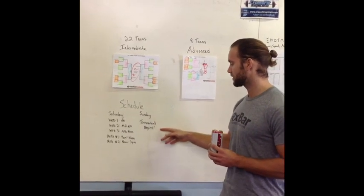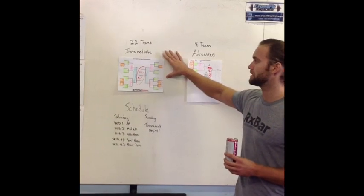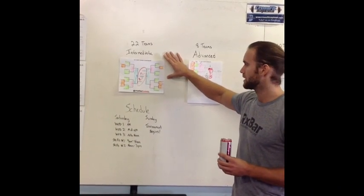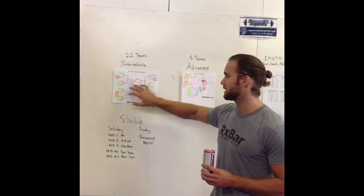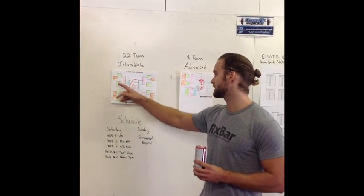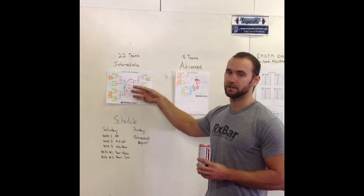So Sunday, the tournaments begin. We're going to have 22 teams in the intermediate division. We're going to have a seeded elimination tournament starting in early morning on Sunday in which seeds 16 through 22 are going to have to do a buy-in to get to the tournament.